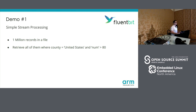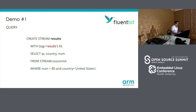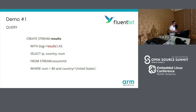In the first demo, we're going to have a normal file that has one million records. I'm going to query all of them that belong to the country United States and numbers greater than 80. Maybe you can say this is pretty simple — I can ingest all the data into my database. But in order to do that, you need to perform data collection, data transfer, and ship the data out. We're going to use a query like this. I'm going to show how FluentBit works. Simply, we're going to create a stream called 'results' with a tag 'results' because we're going to group the records and select the IP, country, and number from a stream called 'Open Source Summit' with the conditions at the bottom.